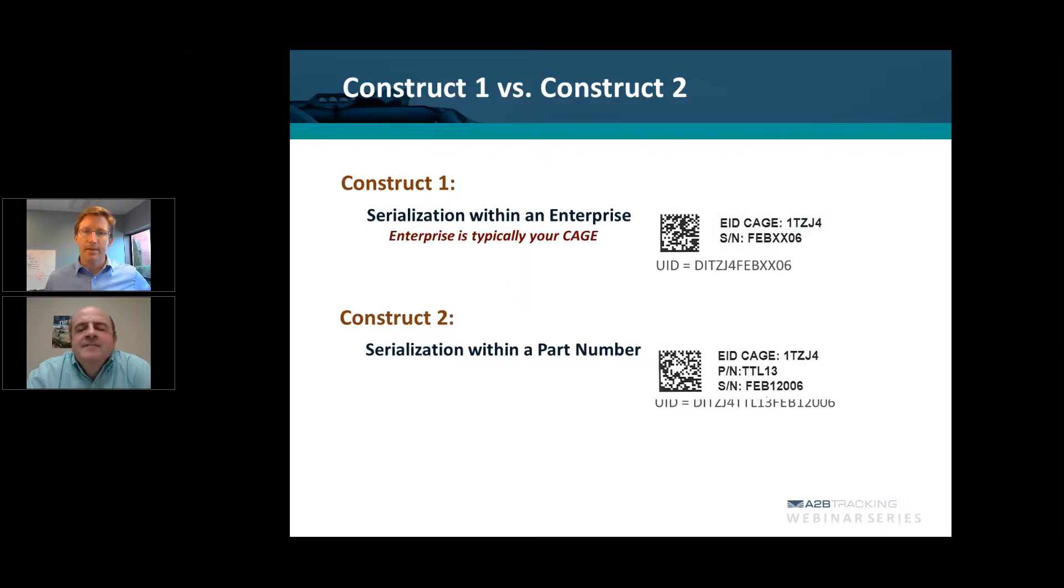Starting with a Construct 1, that is made up of your CAGE code and the serial number. Essentially, what we're talking about on a Construct 1 format is that the items are being serialized at the enterprise level or the CAGE level. Now, you can also use a DUNS number or a DODAC in place of a CAGE, but the vast majority of the time, a CAGE code is used.